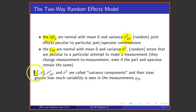The variances sigma squared alpha, sigma squared beta, and sigma squared are called variance components. Their sizes govern how much variability is observed in the measurements made in a gauge R&R study.